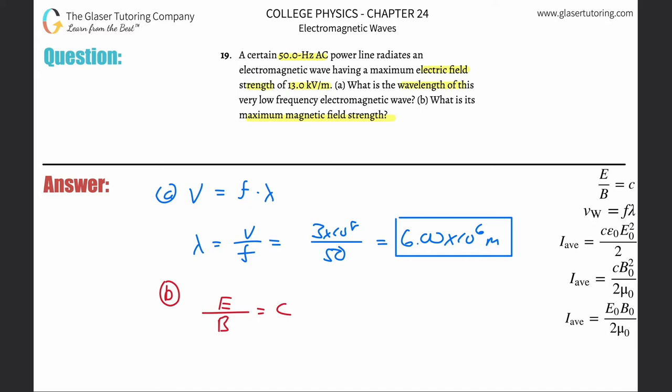So if I want to solve this for B, just simply cross multiply these terms and we realize that the magnetic field strength is a function of the electric field strength and the speed of light. We know the electric field they told us is 13 kilovolts per meter. We need volts per meter though, so that's 13 times 10 to the third.